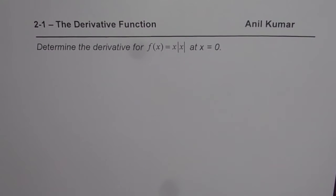I'm Anil Kumar and here is probably one of the most difficult questions on derivative of the function. Determine the derivative of f(x) = x|x| at x = 0. I'd like you to pause the video, answer the question, and then look into my suggestion.